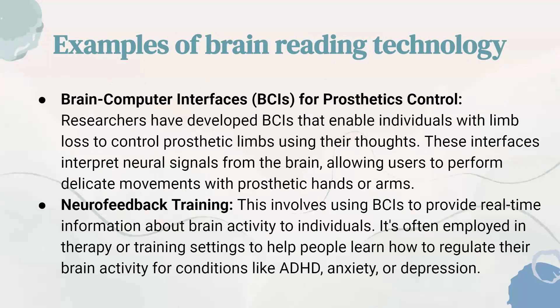Here are some examples that we will be looking into. First, we have brain-computer interfaces, BCIs, for prosthetics control. Researchers have developed BCIs that enable individuals with limb loss to control prosthetic limbs using their thoughts. These interfaces interpret neural signals from the brain, allowing users to perform delicate movements with prosthetic hands or arms. Neural feedback training involves using BCIs to provide real-time information about brain activity to individuals, often employed in therapy to help people regulate their brain activity for conditions such as ADHD, anxiety, or depression. These examples mainly focus on improving one's physical as well as mental health.